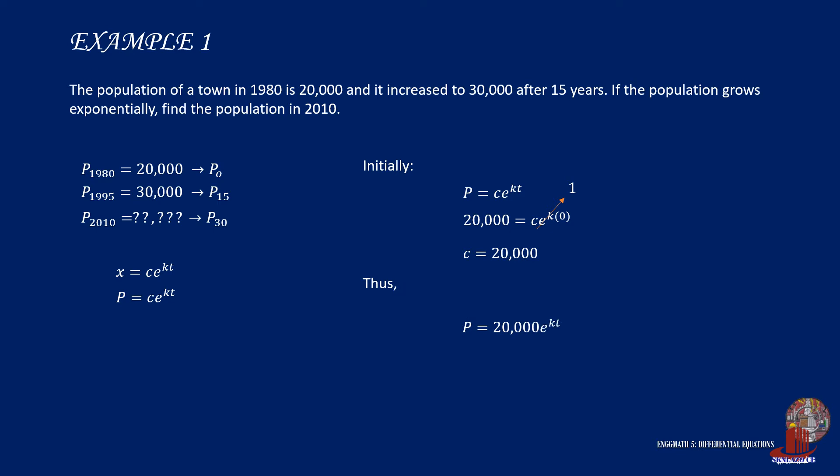Thus, the working equation can be modified as p is equal to 20,000 times e raised to k times t.